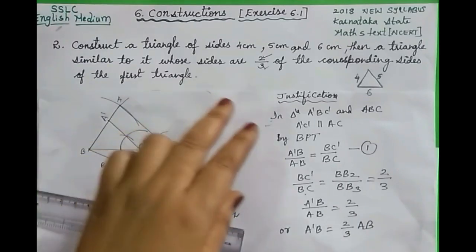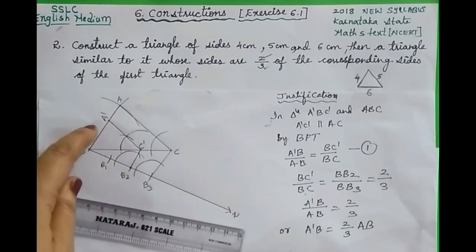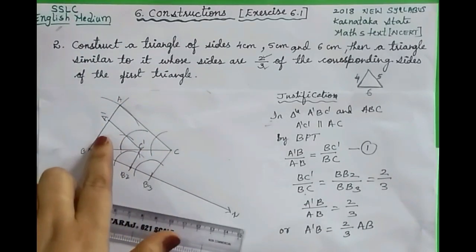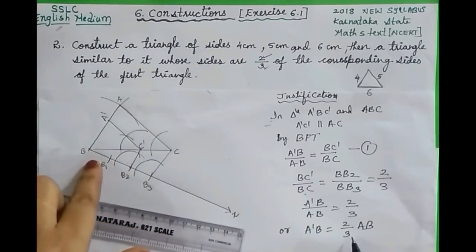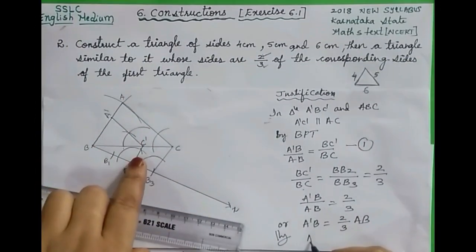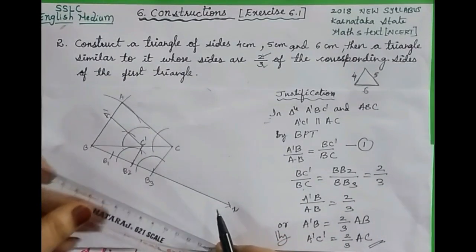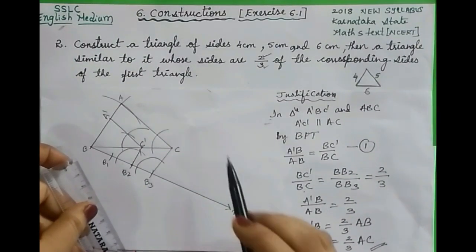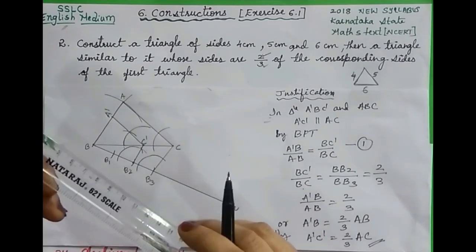So this is the proof. We have constructed triangle A'BC' which is similar to the original triangle ABC, and whose every side — A'B equals 2/3 of AB, and similarly A'C' equals 2/3 of AC. Dear students, hope you have understood the construction. If you are interested in our next problem-solving video, you can check our playlist on our channel. Thanks to everyone.